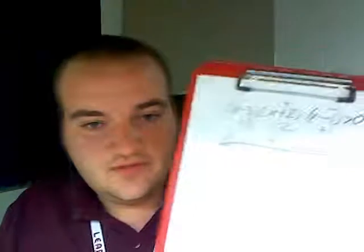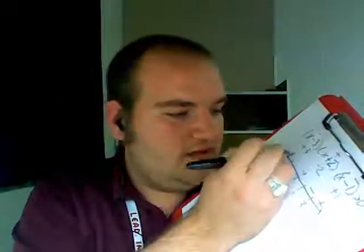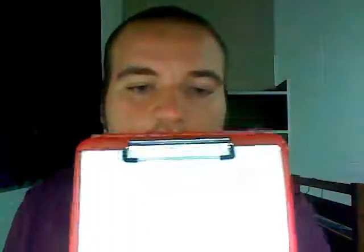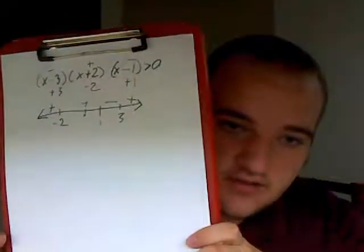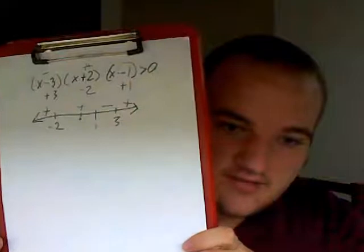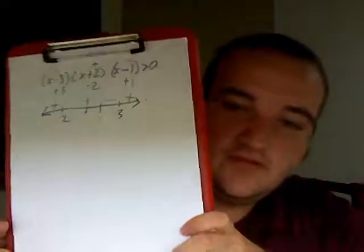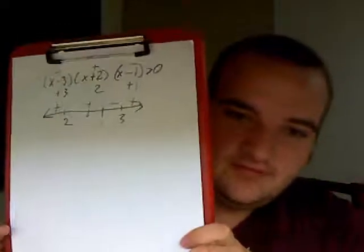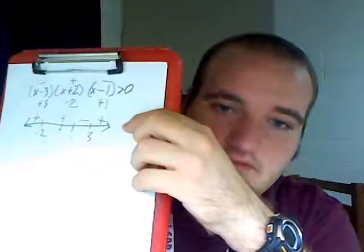Now, this part is really cool. It's just a pattern. The signs will alternate on this number line. These are the values.